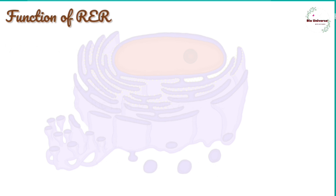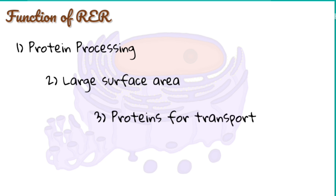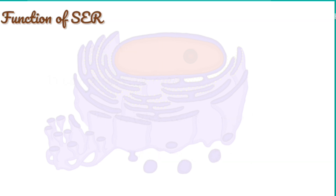Functions of rough endoplasmic reticulum: one, the luminal side possesses enzymes for processing polypeptides synthesized by attached ribosomes; two, it has a large surface area which provides proper space to ribosomes for their activity without interference; three, proteins formed by ribosomes attached to rough ER enter its lumen for intracellular and extracellular transport; four, zymogens of lysosome enzymes are synthesized by rough ER.